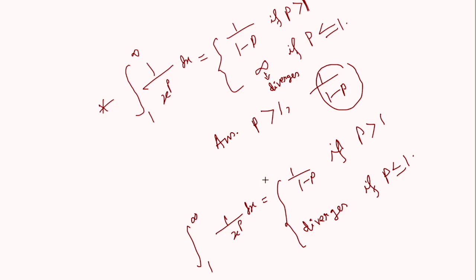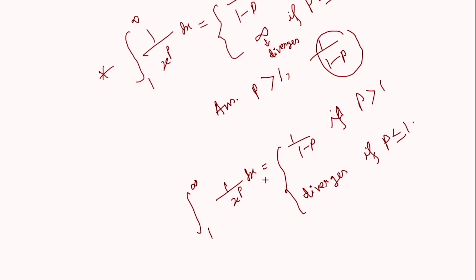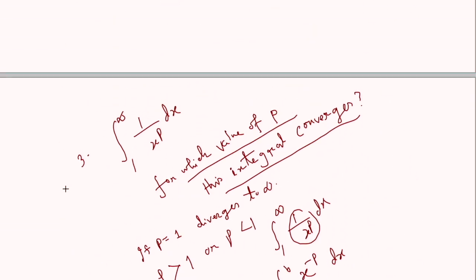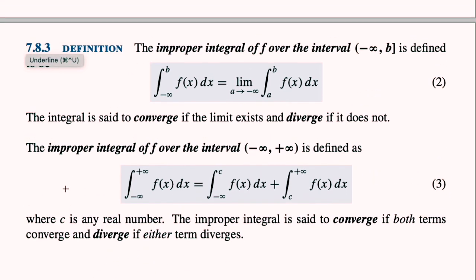That is all for this video. In our next video I will again discuss improper integrals of type 1, because we need to define another definition when the lower limit is negative infinity, and also when both limits are infinite. I will discuss some examples to understand those definitions. Thank you very much for watching.